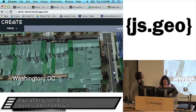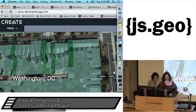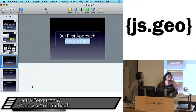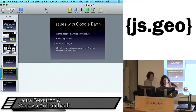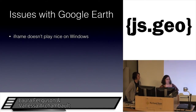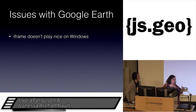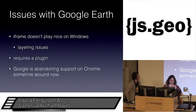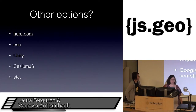Going back to the talk — that's Google Earth. We talked to Google and they said they're going to be phasing out Google Earth. We were already having issues with Windows because iframes don't play nice, and when you're talking about a software-as-a-service product with lots of windows all in JavaScript, they're not playing nice. That created layering issues. It requires a plugin — obviously a downside — and now it's really dead. So not good.